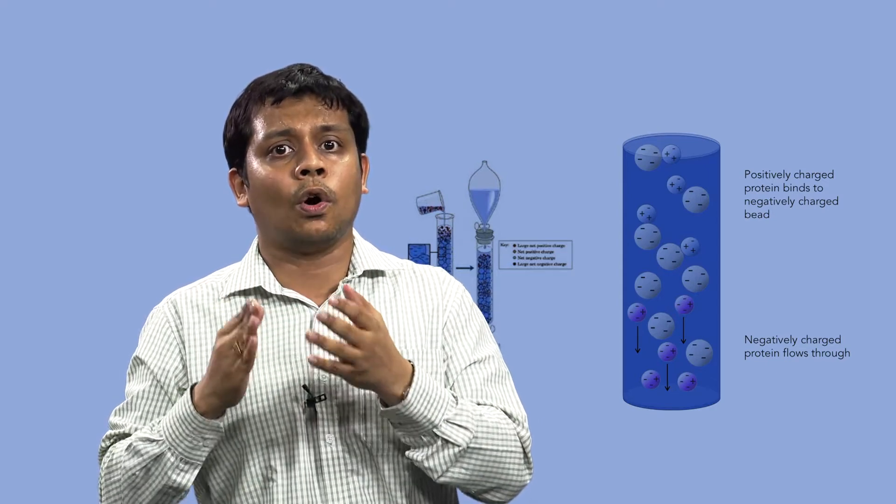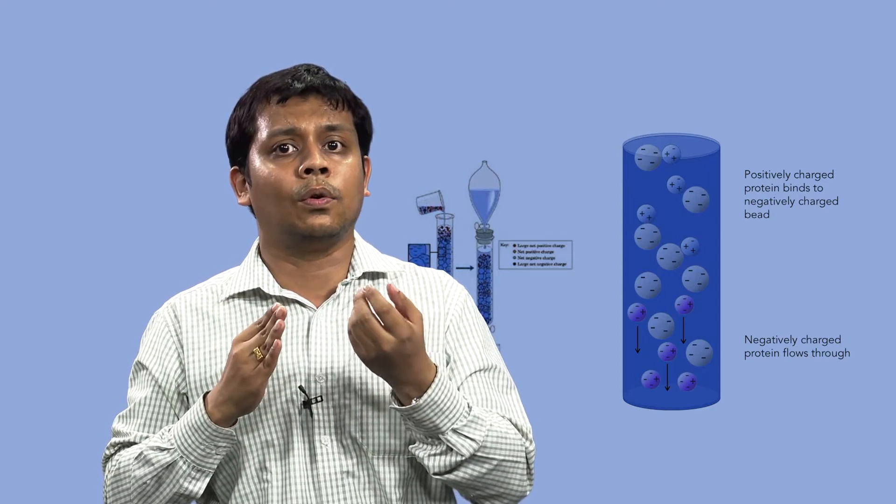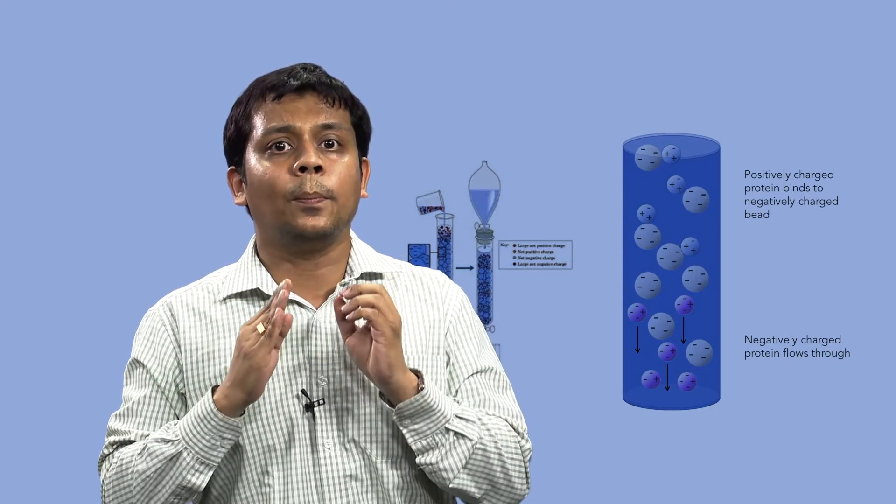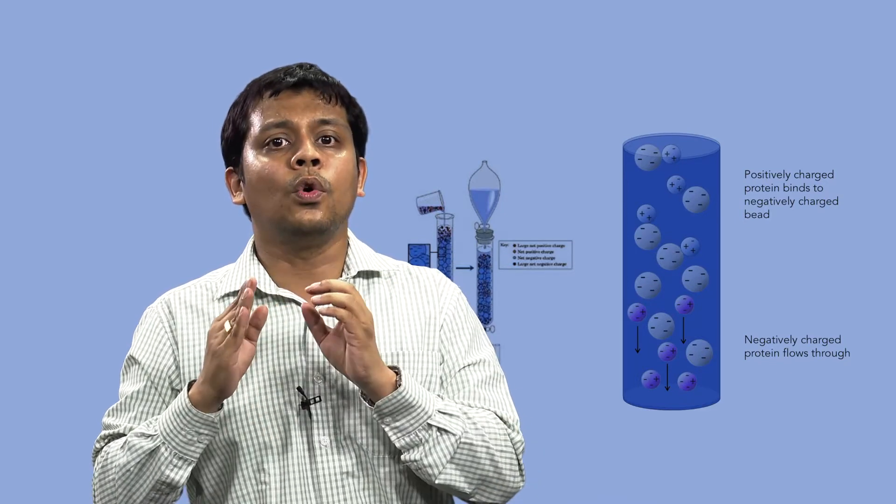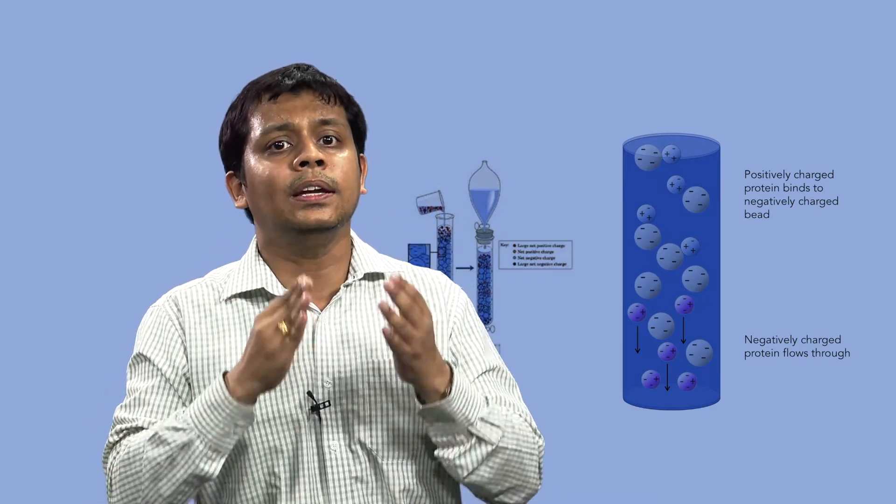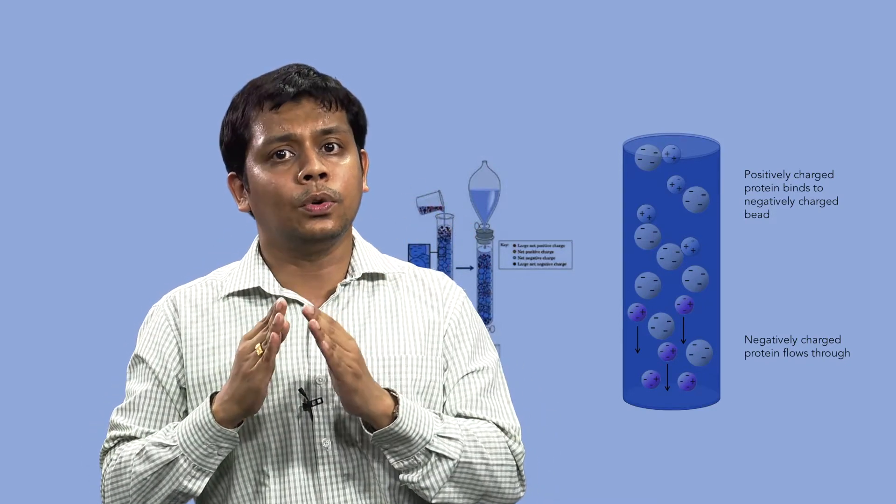As ionic strength increases, the salt ions, typically sodium+ or chlorine-, compete with the bound components for charges on the surface of the medium, and one or more of the bound species begin to elute and move down the column.